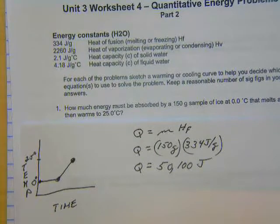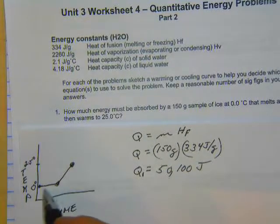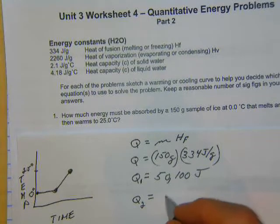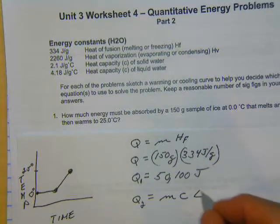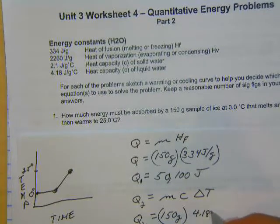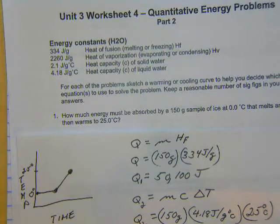Now we take the liquid water and raise it to 25 degrees. We'll call this Q1. Now we've got to do Q2, which equals mass times specific heat times the change in temperature. Mass is 150 grams, specific heat of liquid water is 4.18 joules per gram degrees Celsius, and the change in temperature from 0 to 25 is 25 degrees Celsius. So Q2 equals 15,600 joules.